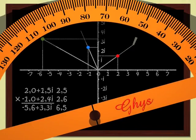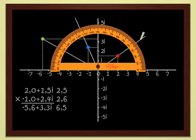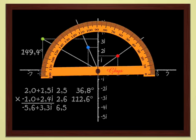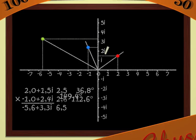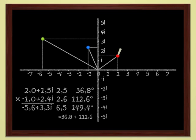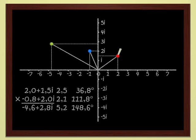The argument of a complex number is measured by the angle between the abscissa axis and the straight line joining the origin to the point. Here, for instance, the argument of the red complex number is 36.8 degrees. The argument of the blue point is 112.6 degrees. And for the product, the green point, we get 149.4 degrees. That is the sum of the arguments of the two numbers. When we multiply two complex numbers, moduli are multiplied and arguments are added.